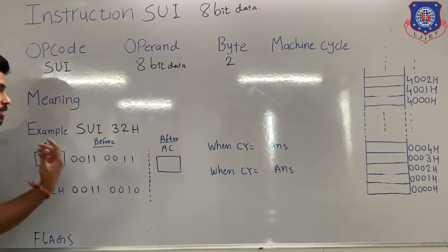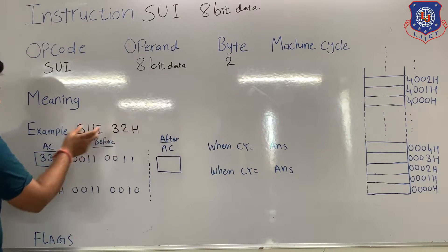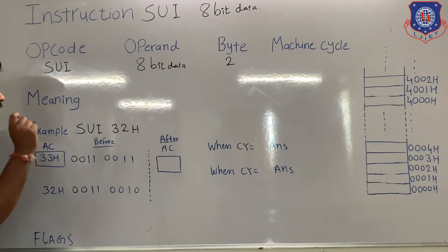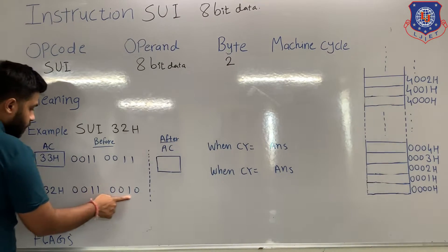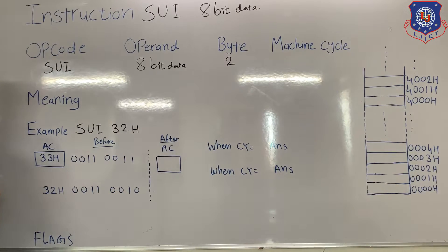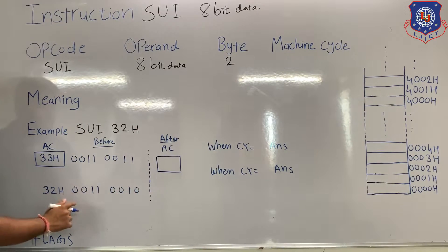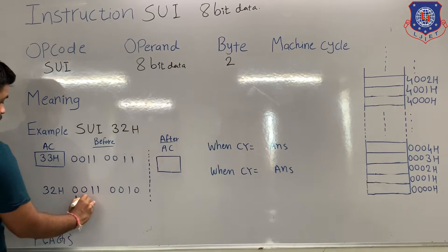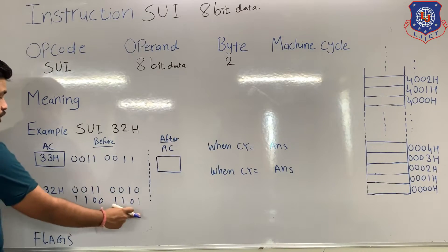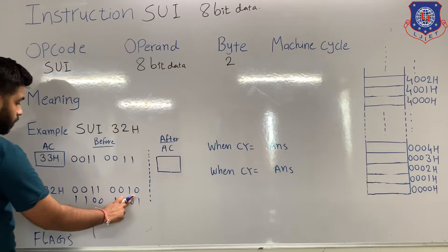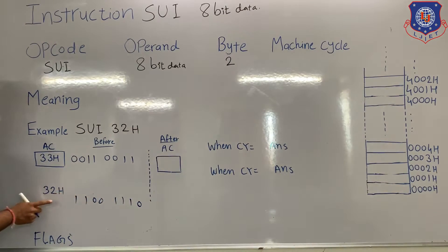To perform arithmetic subtraction, the microprocessor will use the 2's complement method. To subtract 32H from the accumulator, the microprocessor will first convert 32H into 2's complement. The 32H is represented in binary. To convert it to 2's complement, we first find the 1's complement — which gives 11001101 — then add 1, giving the 2's complement representation of 32H.